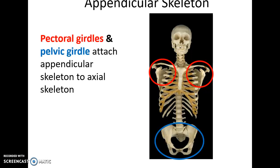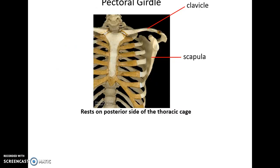The Appendicular Skeleton includes the pectoral girdles and the pelvic girdles, as well as the limbs that are attached to the axial skeleton by these girdles.